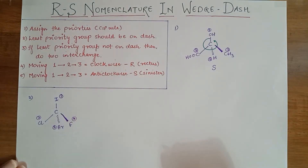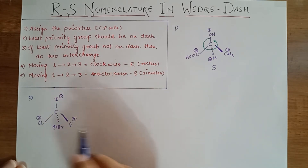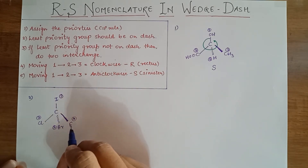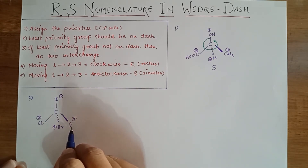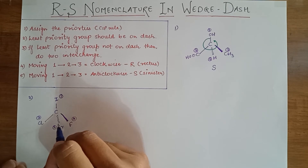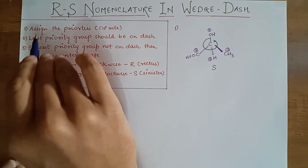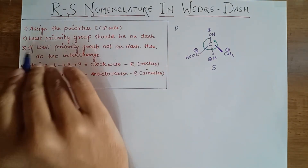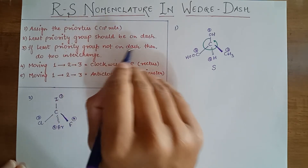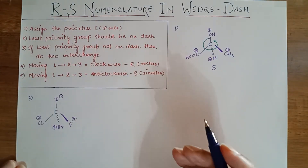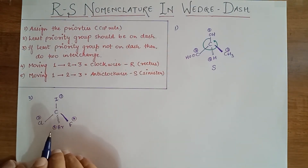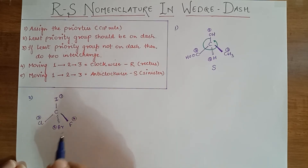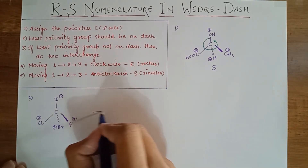Here you can see that fluorine, which has the lowest priority, is not present on the dash. The condition is that the least priority group must be on the dash. If the least priority group is not on the dash, you must perform two interchanges.